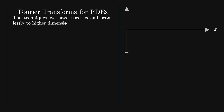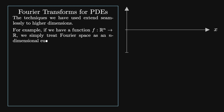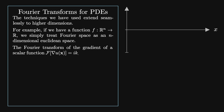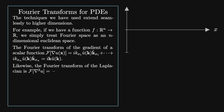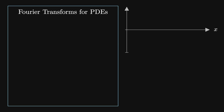The techniques we have discussed so far extend seamlessly to higher dimensions. If we have a function in n-dimensional space, we simply treat the Fourier space as an n-dimensional Euclidean space. The Fourier transform of the gradient of a scalar function u of x equals i k times u-hat of k as a vector. Likewise, the Fourier transform of the Laplacian is minus k squared times u-hat of k. Then we can use vector algebra to solve the equation for u-hat.